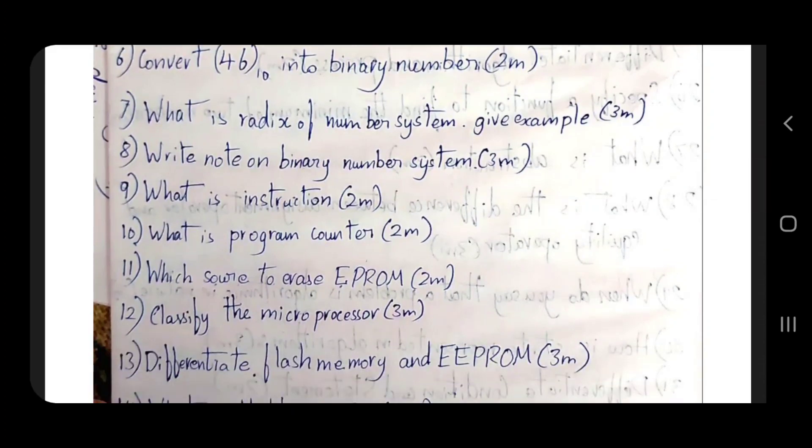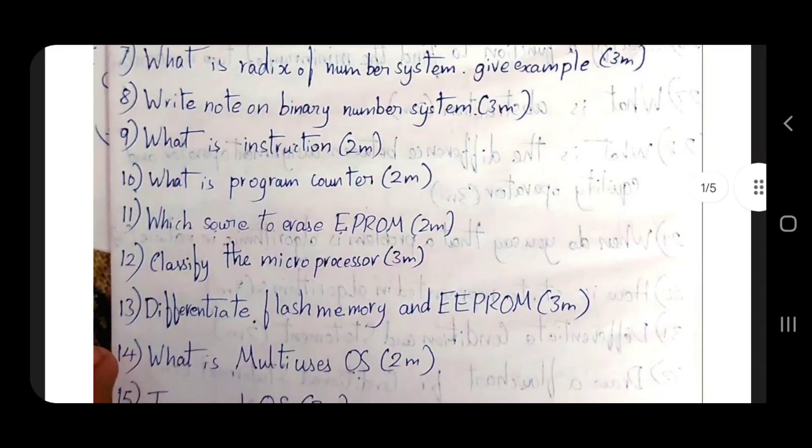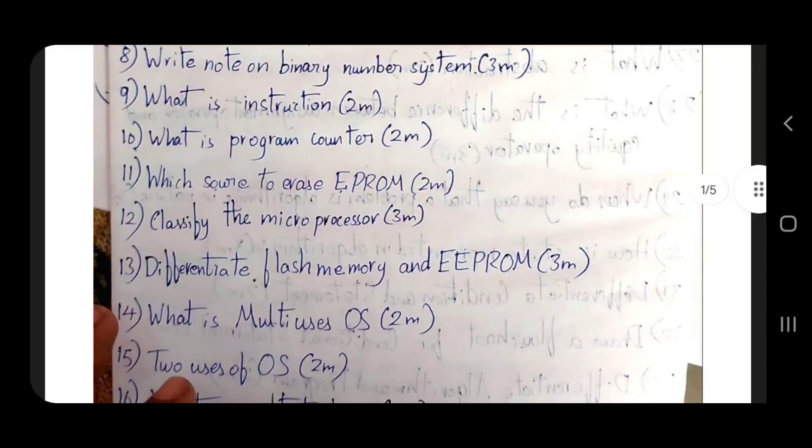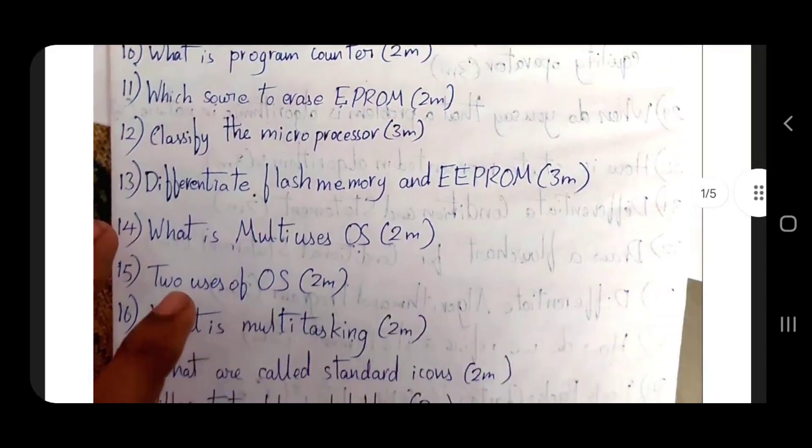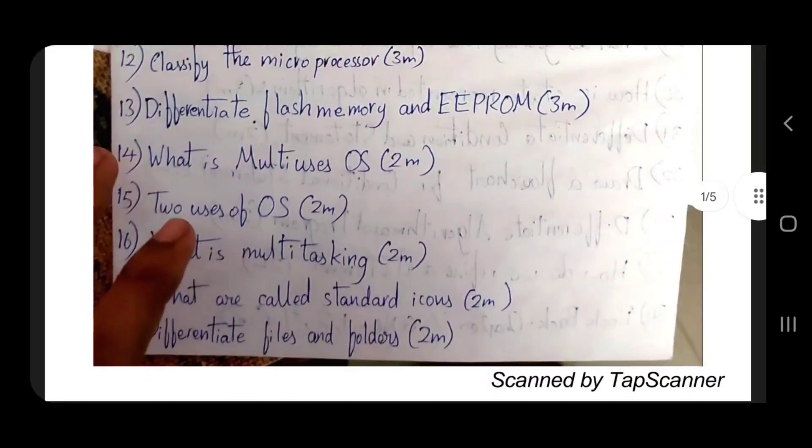What is instruction? Microprocessor? What is program counter? Which source to erase EPROM? Classify the microprocessor. Differentiate fast memory with EPROM. What is multi-users? Two uses of OS. What is multitasking? What are called standard icons?